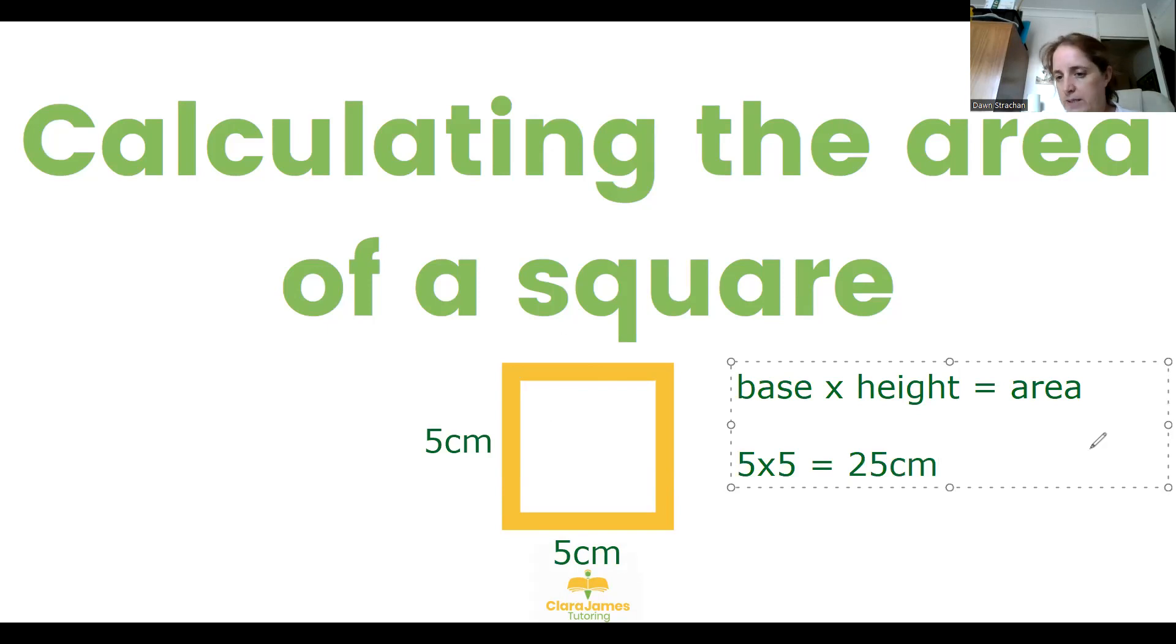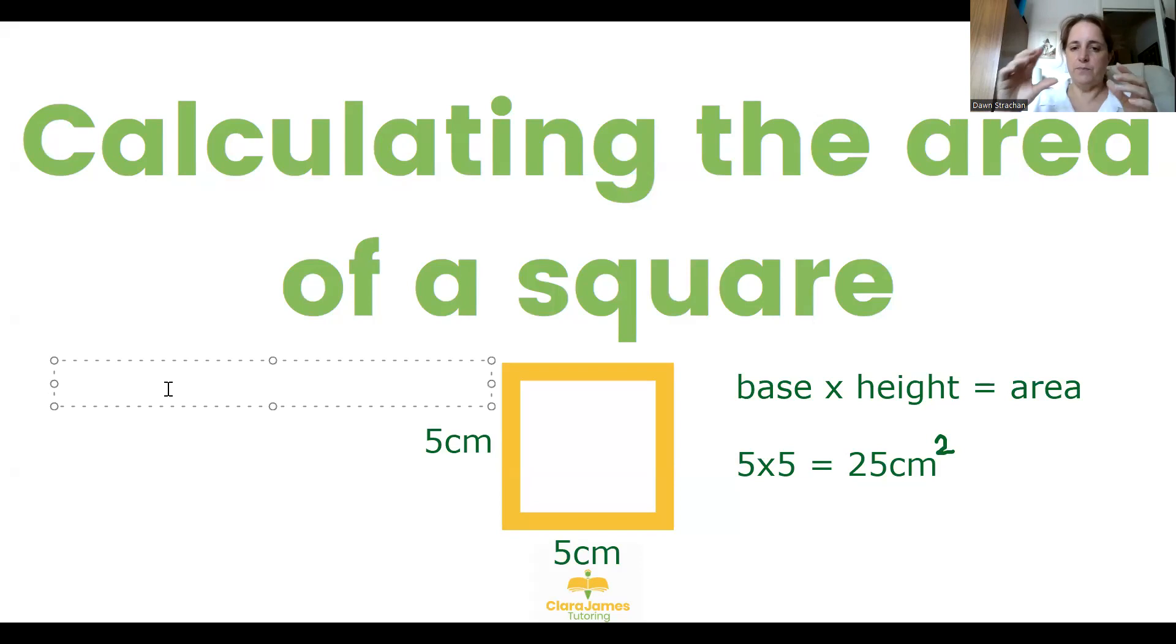What may happen this time is that you'll be told that my square has a base of 4 centimeters, what's its area? And so because each side is the same, what we can do is literally just 4 times 4, and that will give us the answer 16 centimeters squared. Because they told us the base was 4 centimeters, we know that the height is also going to be 4 centimeters.